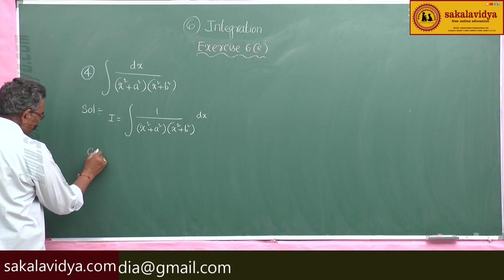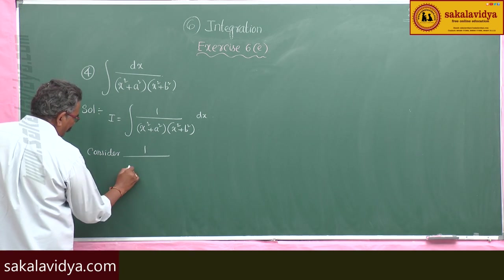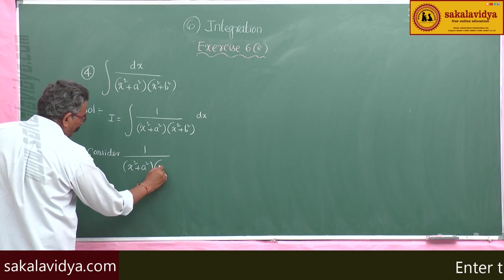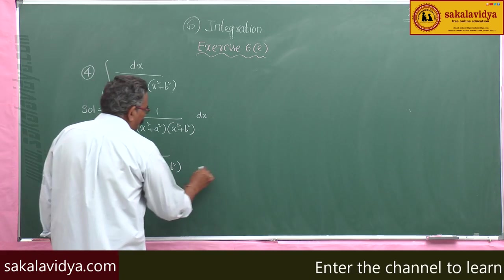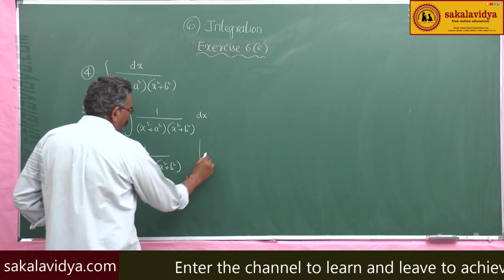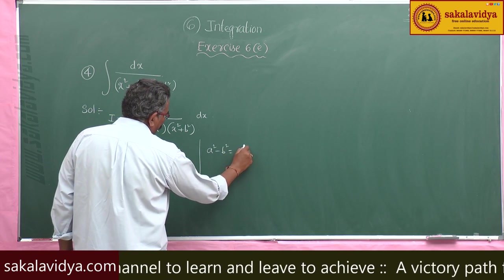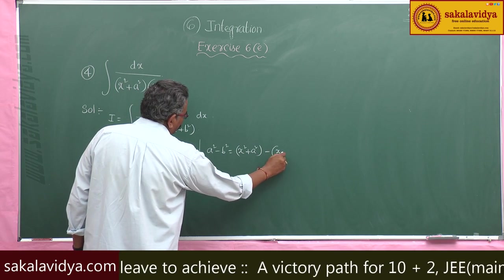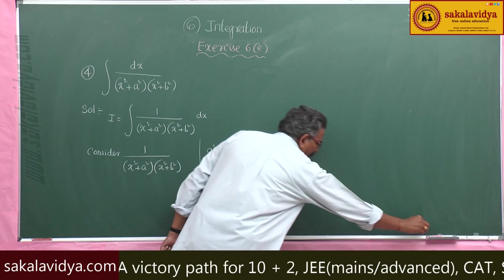Consider 1 divided by (x² + a²)(x² + b²). Now, here (a² - b²) can be written as (x² + a²) minus (x² + b²), which we can write.